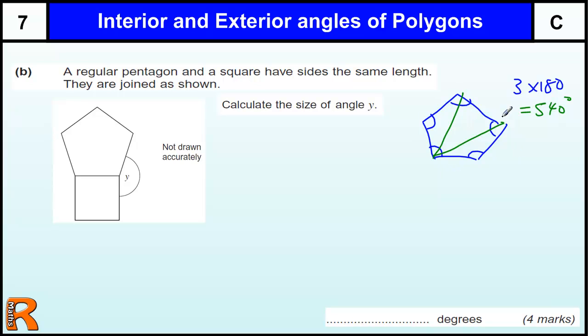And that's the same for any polygon. The sum of the angles is going to be two less than the number of sides times by 180, because that's how many triangles you can make in it. We should know that the angles in a square are right angles.